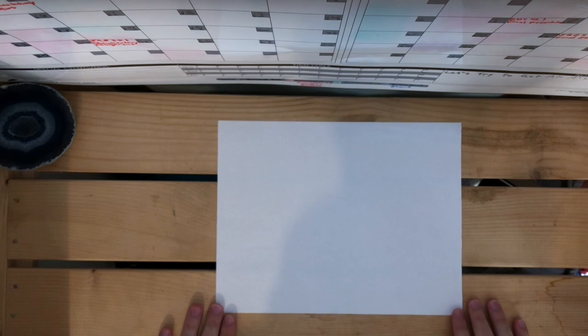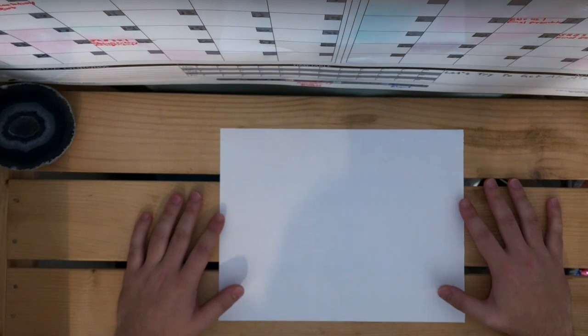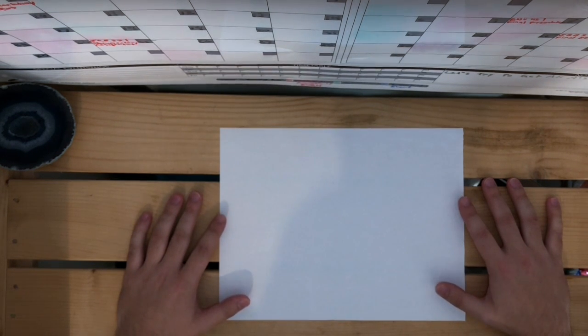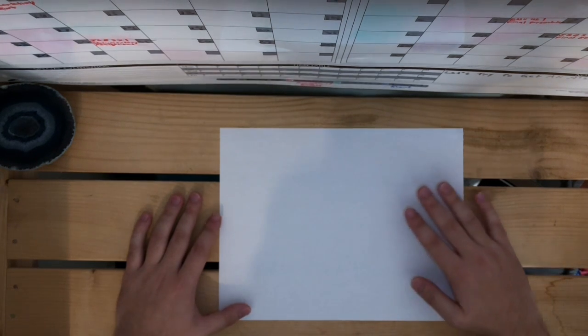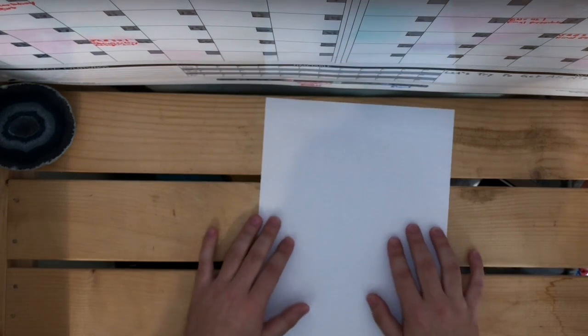Today I'm going to be teaching you guys how to make a paper airplane called the dart. What you're going to need is a regular size sheet of paper and that's about it. So without further ado, let's begin.